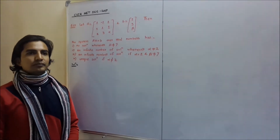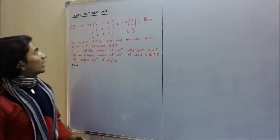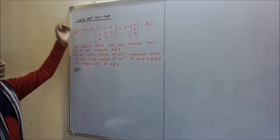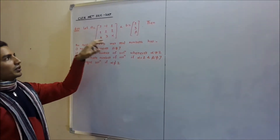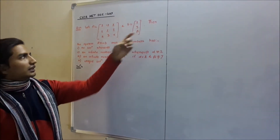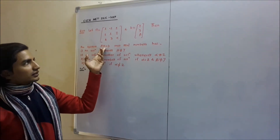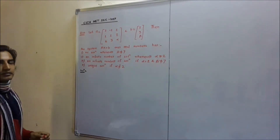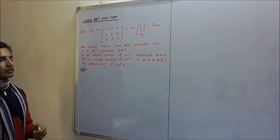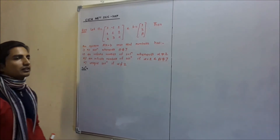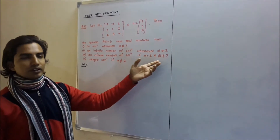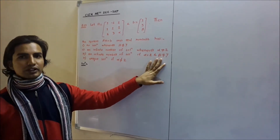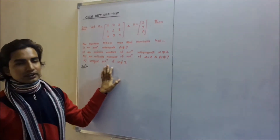Hello friends, Himansu here. In this continuation I am going to solve question number 24. Let A be given by this and B is given by this, then the system Ax = b over real numbers has no solution whenever beta is not equal to 7, and infinite number of solutions whenever alpha is not equal to 7, or infinite number of solutions if alpha is equal to 2 and beta is not equal to 7.